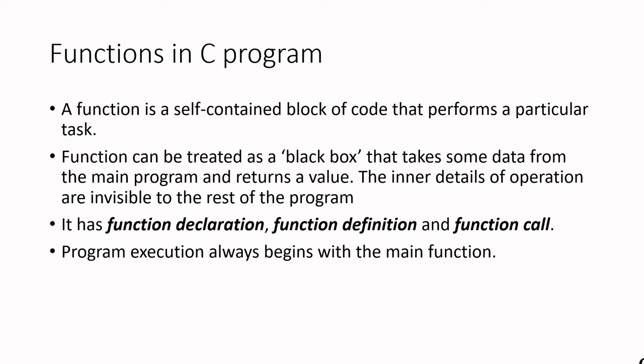But if you need to multiply two matrices in the program multiple times, if we write it as a function, whenever it is required you can directly call that function. In that instance, we use functions. A function can be treated as a black box that takes some data from the main program and returns the value. The inner details of operation are invisible to the rest of the program.